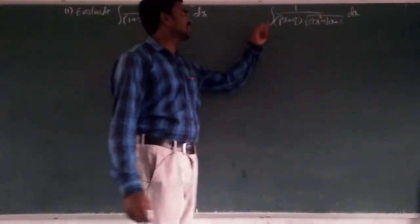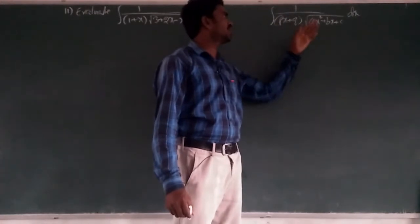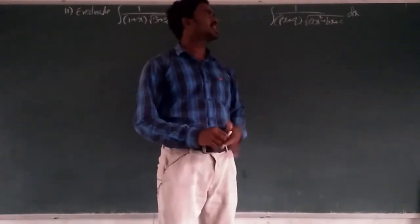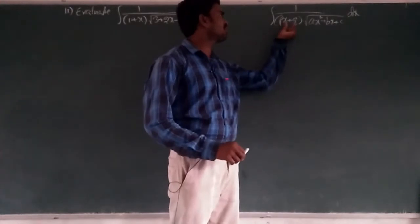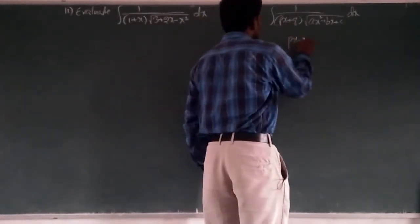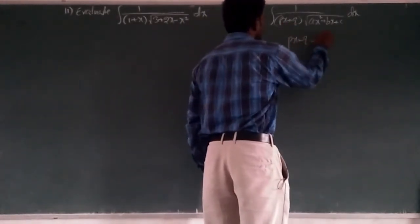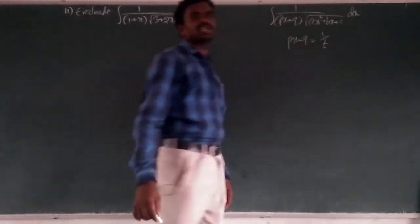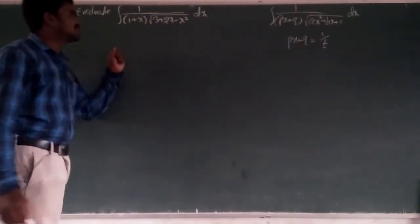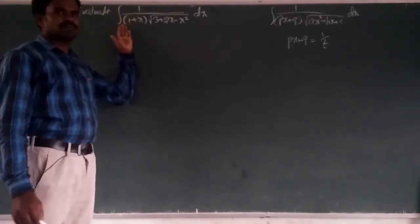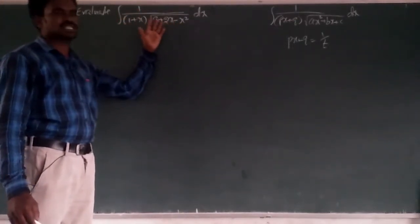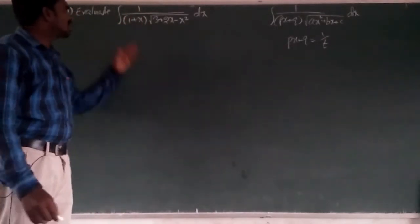The title is: integration of 1 by (px + q) into the integral of √(ax² + bx + c) dx. In this type of question we have to argue px + q equal to 1 by p, and then proceed. The question is in the form of 1 by (px + q) into root of (ax² + bx + c), whatever it is.